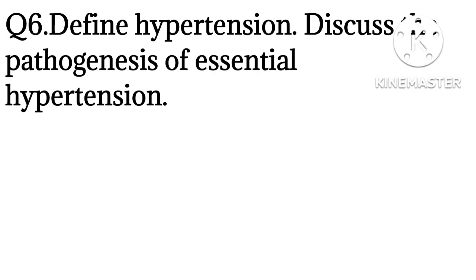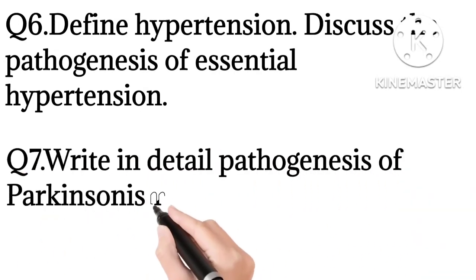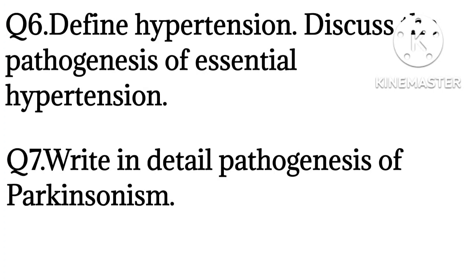From Alzheimer's, Parkinson's, and epilepsy, one is fixed for your examination. The sixth question is: define hypertension and discuss the pathogenesis of essential hypertension. Hypertension is also a repeatedly asked question in the examination, so be cautious. For hypertension, write the definition and the different types of hypertension clearly.